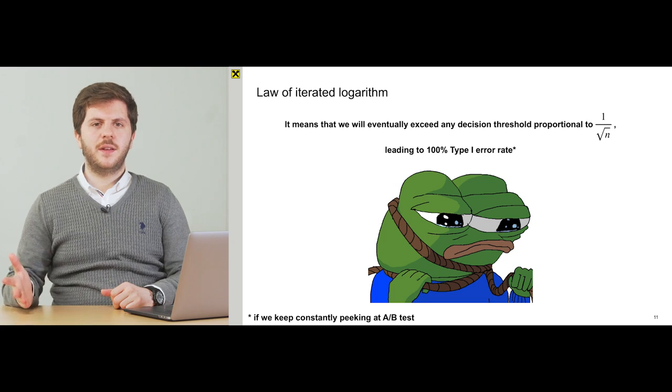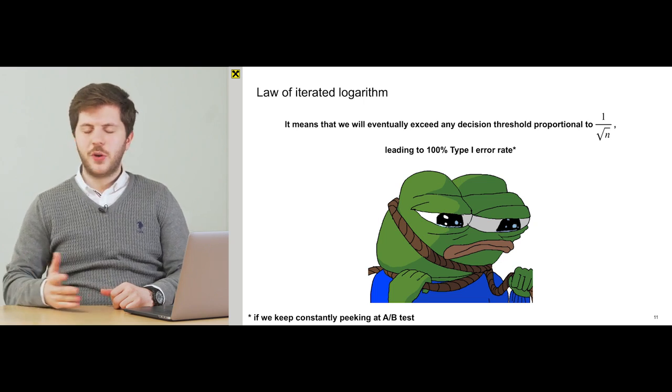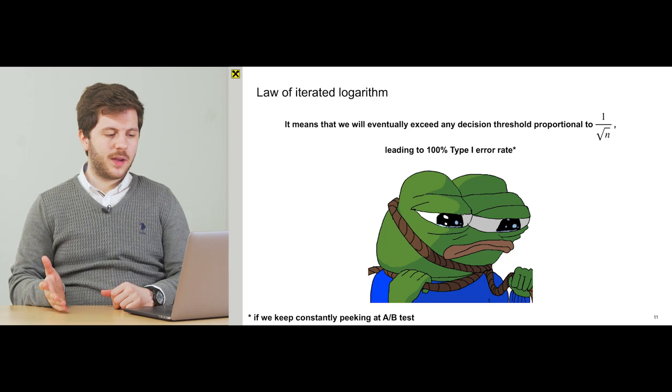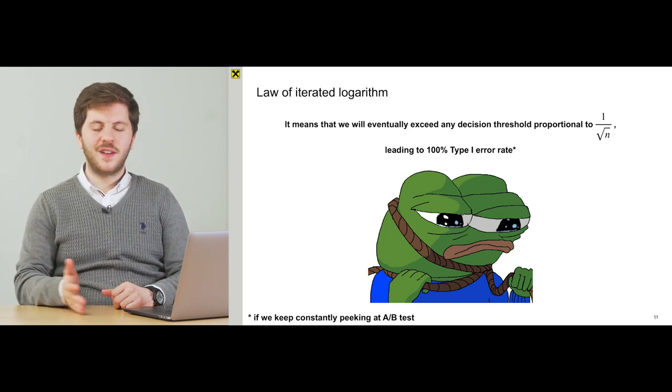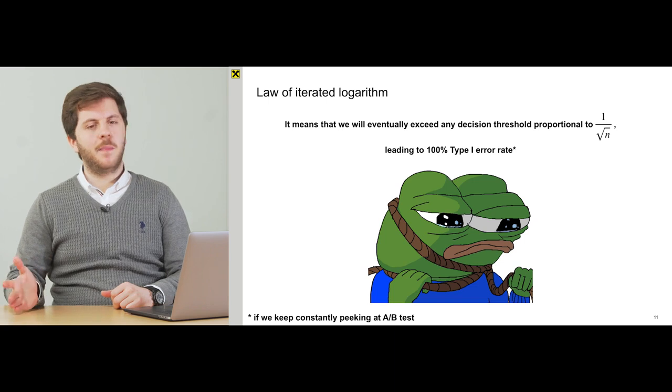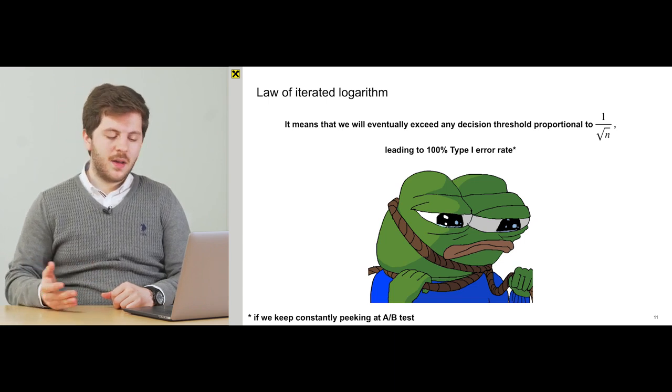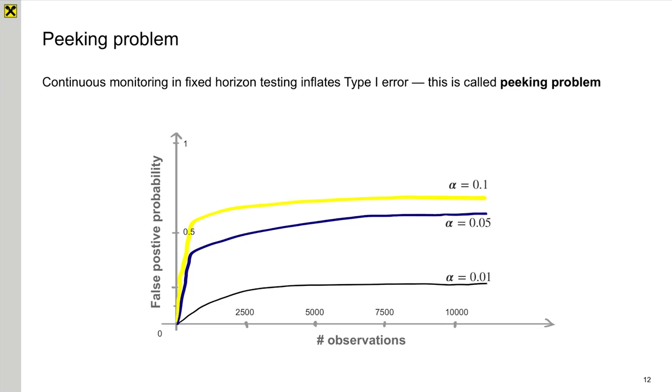And someone could say, sorry Narses, do you really want to say that we should conduct A-B test with infinite sample size? And he will be correct. In practice, when we are fixing the number of observations to 10,000 and we continuously monitoring it and we stop the test the first time we see the effect exist, it will lead us to 50% type 1 error rate, which is very bad.